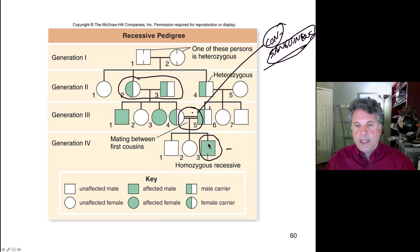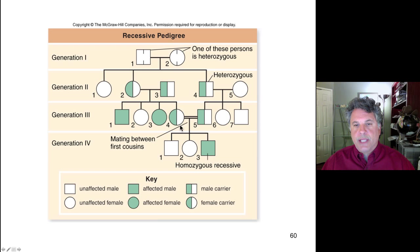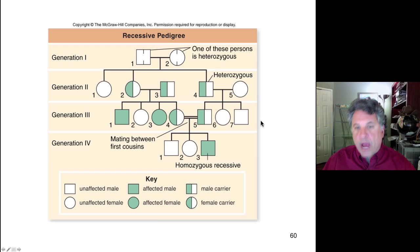This is why almost universal taboos exist against consanguineous matings in almost all cultures. It reflects a practical understanding extending far back in human history — long before thorough knowledge of genetics — that consanguineous marriages were likely to result in detrimental effects in offspring.